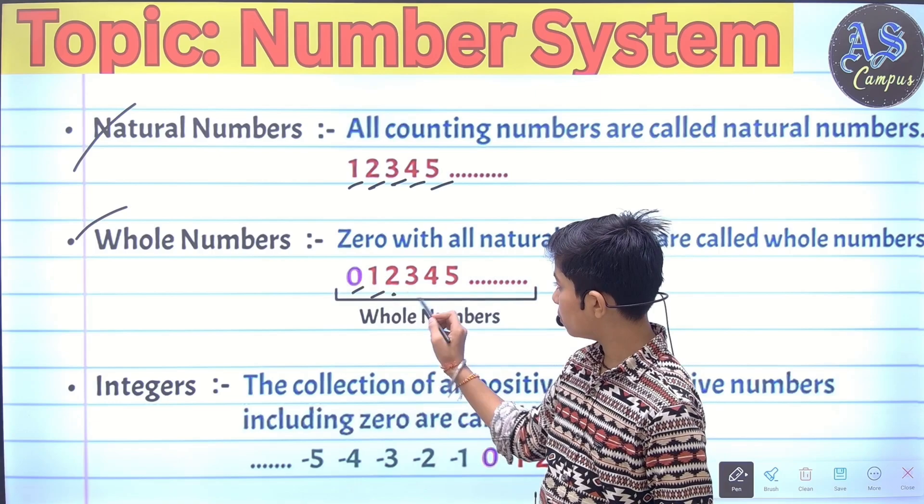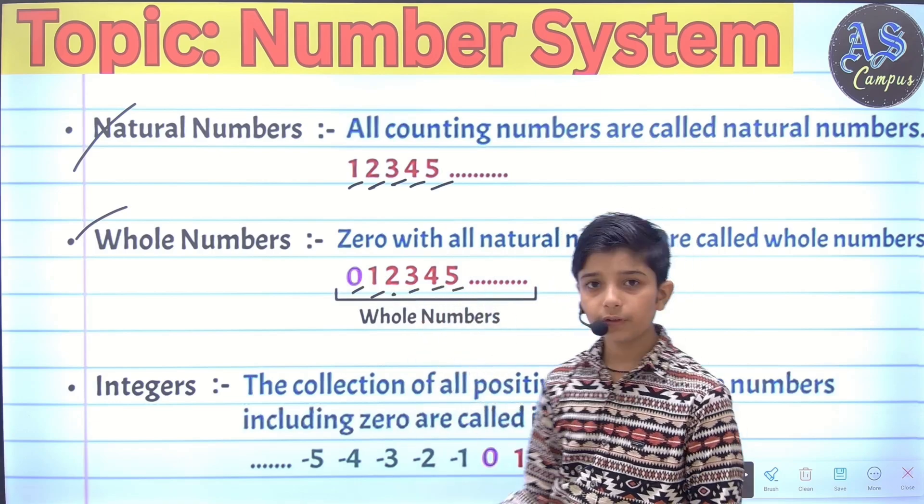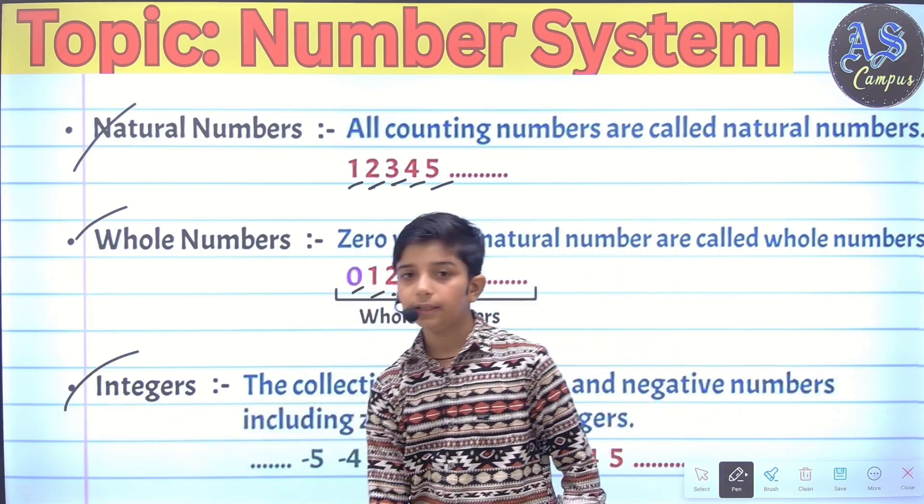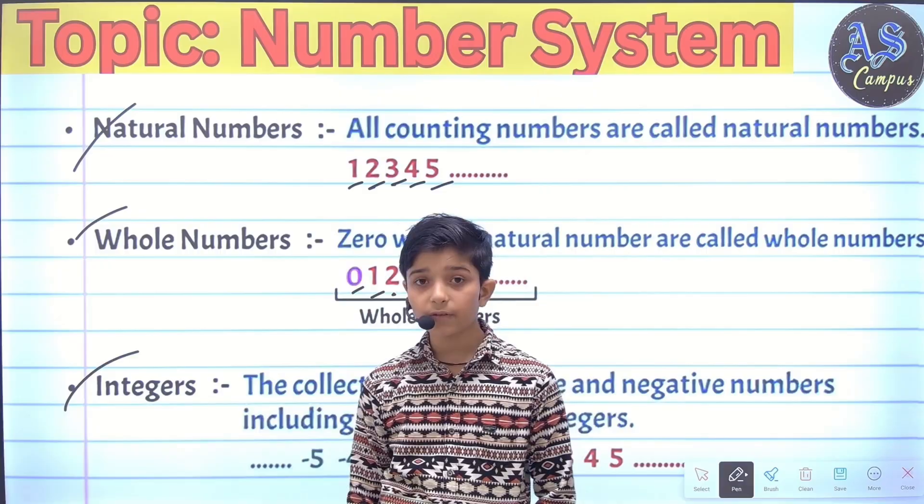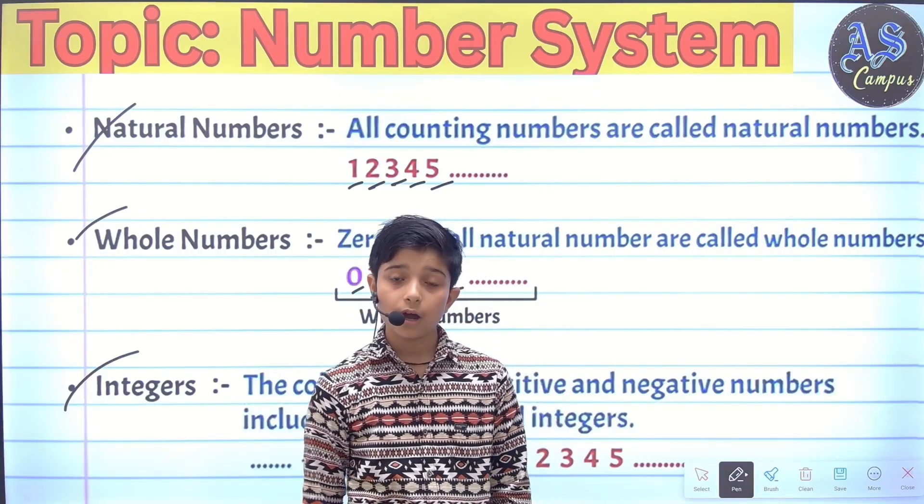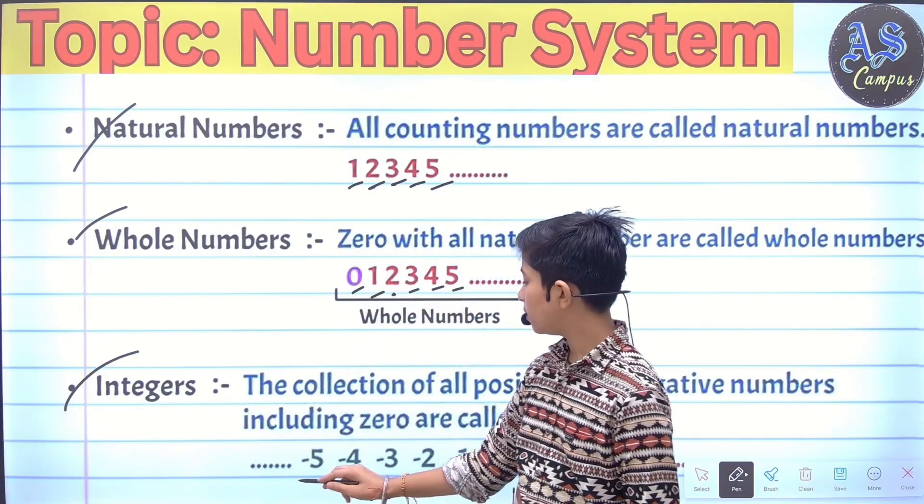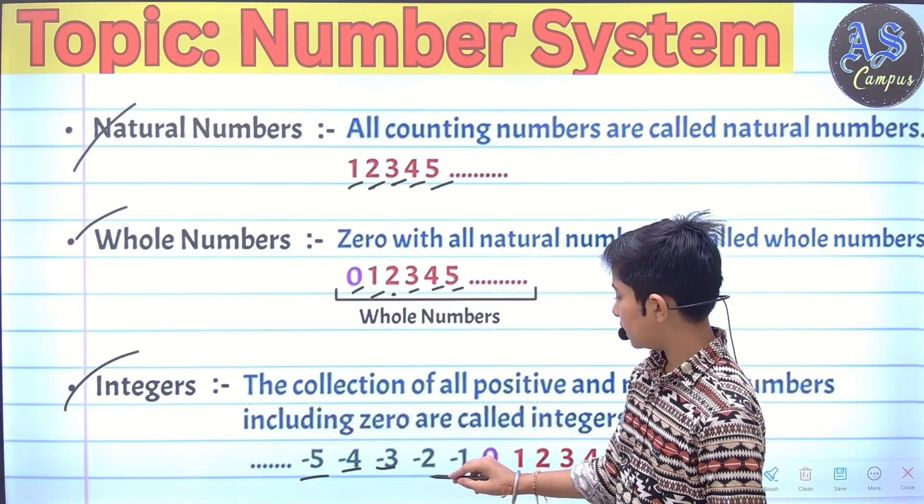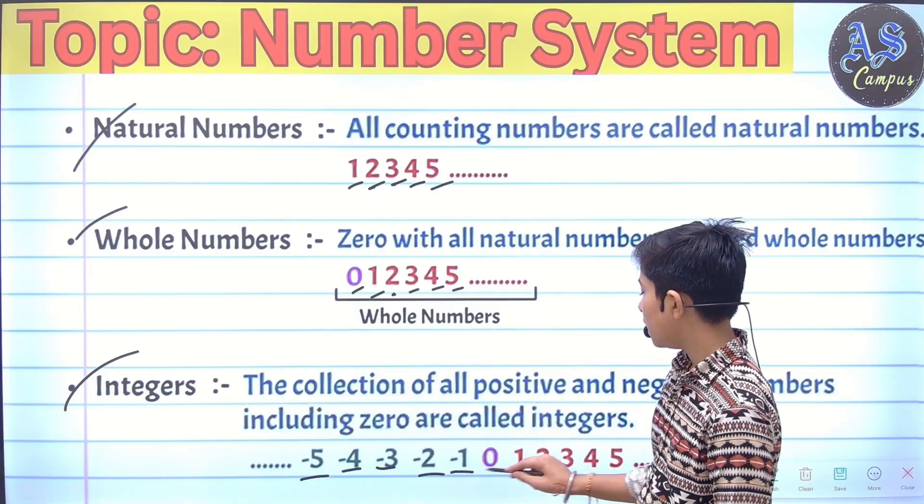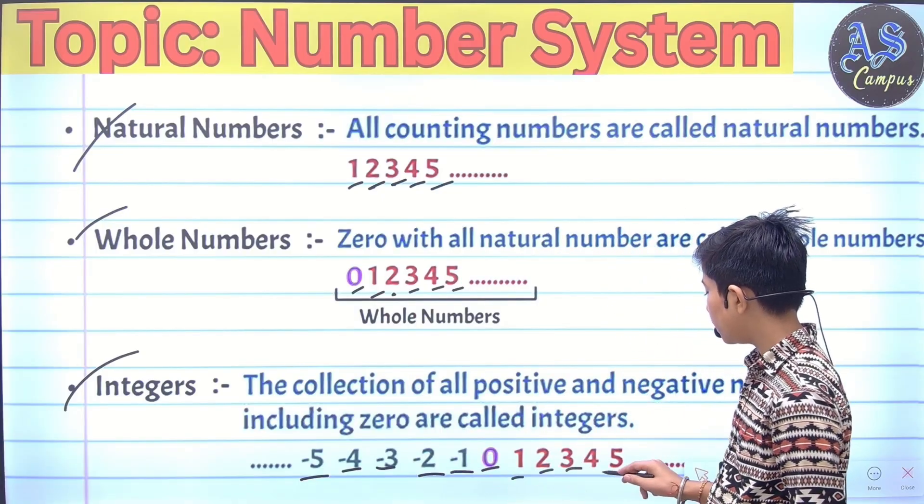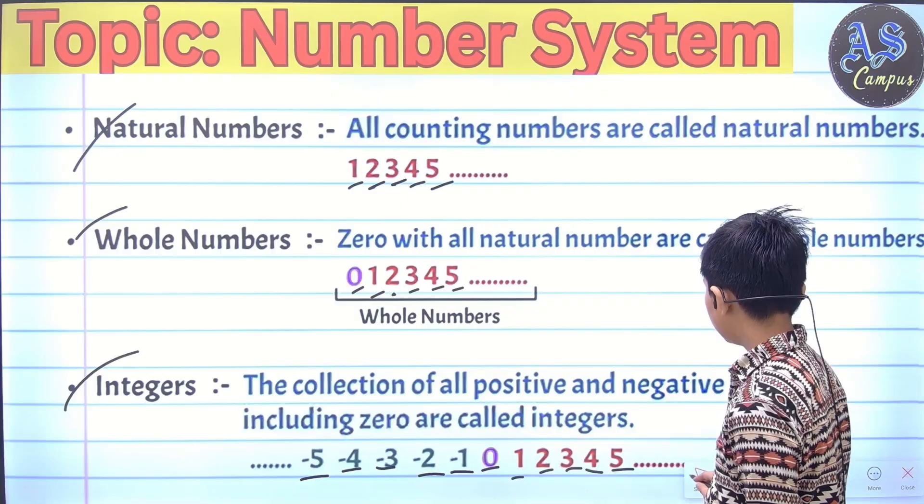Integers: The collection of positive and negative numbers including zero are called integers. Example: -5, -4, -3, -2, -1, 0, 1, 2, 3, 4, 5, etc.